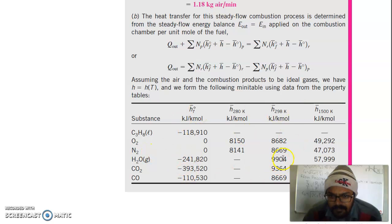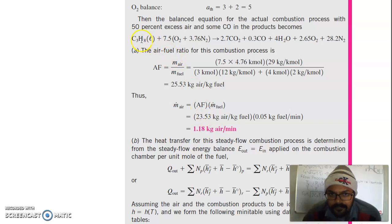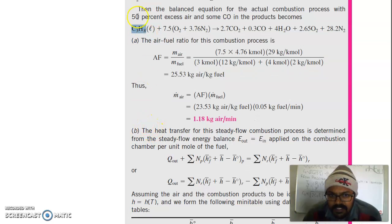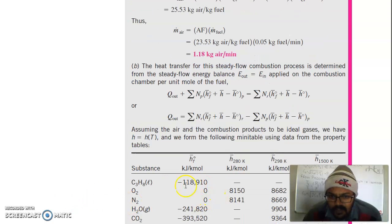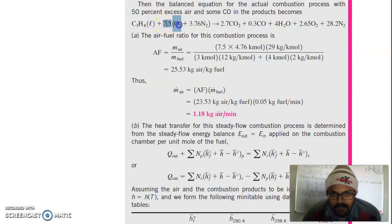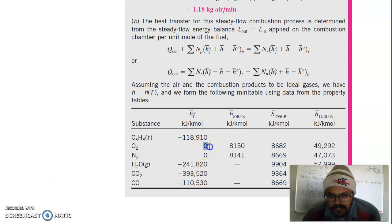Take the thermodynamic tables and insert all values into the equation. For C3H8 at 25°C, only the enthalpy of formation H_f is given; the sensible enthalpy terms cancel since fuel enters at 298 K. For 7.5 kmol of O2, the enthalpy of formation is zero, so the contribution is H(298 K) − H(280 K) = 8150 − 8682, and similarly for other species.